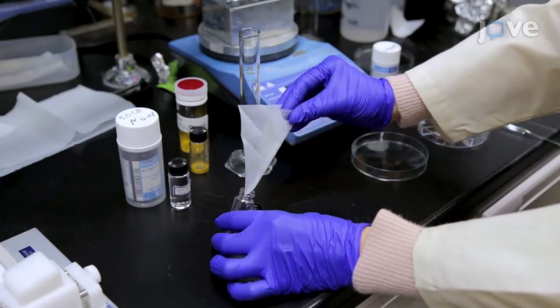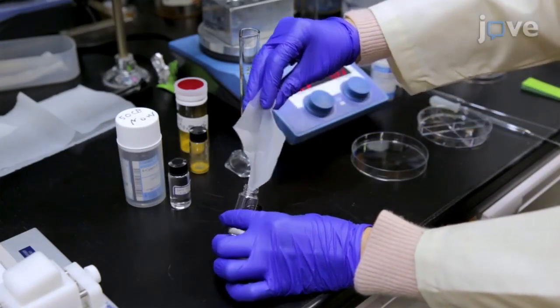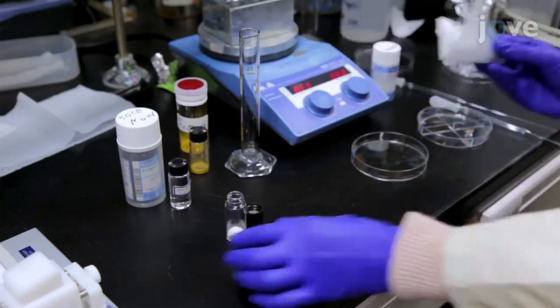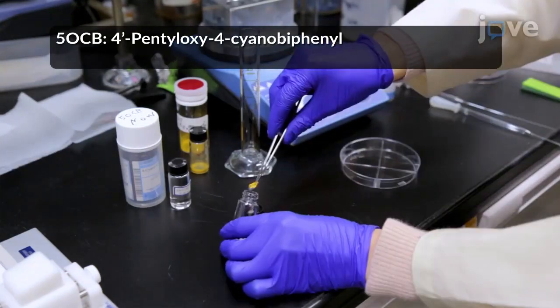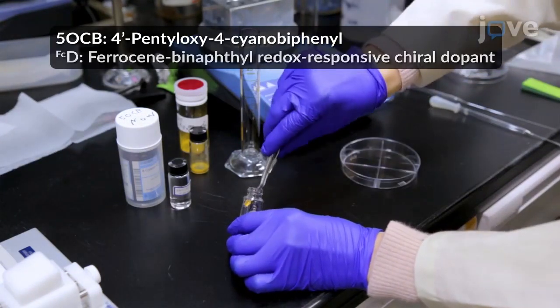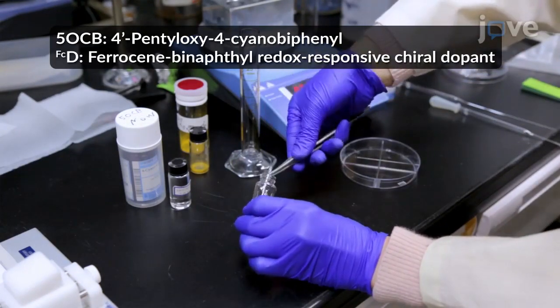To begin preparing the cholesteric liquid crystal mixture, place 84.6 mg of 5-OCB and 5.922 mg of FCD in a 10 ml glass vial.